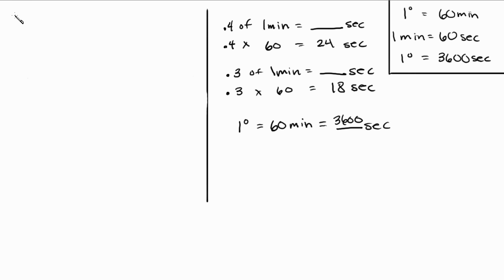So let's do this. Let's say we have the same problem we did before, 39.46, and now what we're going to do is put another decimal place after this. So we're going to put 0.46, and this is in degrees.